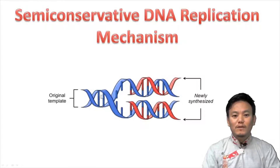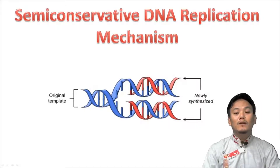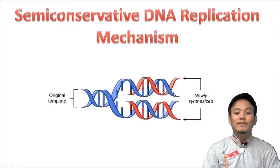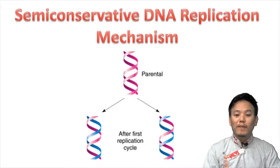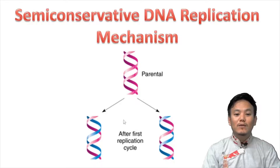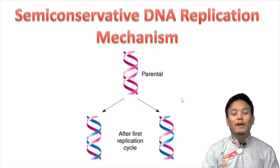What does semi-conservative DNA replication mean? It simply means that when an original DNA replicates, one DNA molecule gives rise to two DNA molecules. In those two new DNA molecules, each will retain one parental DNA strand, and over that parental DNA strand a new DNA strand will be synthesized. So the original parental DNA replicates into two DNA molecules — one parental strand and one newly synthesized strand in each. That mechanism is called semi-conservative DNA replication.